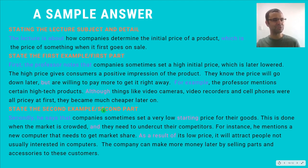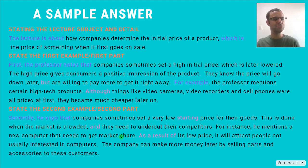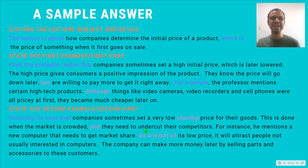Next I state the second example: secondly, he says that companies sometimes set a very low starting price for their goods. This is done when the market is crowded and they need to undercut their competitors. For instance, he mentions a new computer that needs to get market share. As a result of its low price, it will attract people not usually interested in computers. The company can make more money later by selling parts and accessories to these customers. Again I'm using the template — secondly he says that — and for instance — using as a result of to link ideas and make my answer sound more sophisticated.